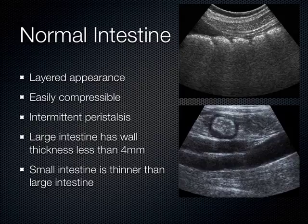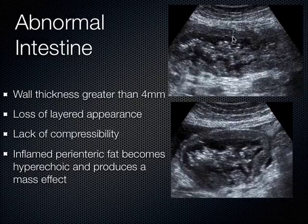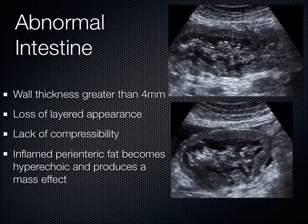Large intestine has wall thickness up to 4 millimeters. Small intestine is less than that — somewhere between 3 and 4 millimeters. If you ever have wall thickness greater than 4 millimeters, no matter what you're looking at, that's an abnormal disease state, whether it's colitis or something else. You just measure the wall from the outer rim down to where the lumen begins, where the air starts. In normal individuals, less than 4 millimeters is the norm.